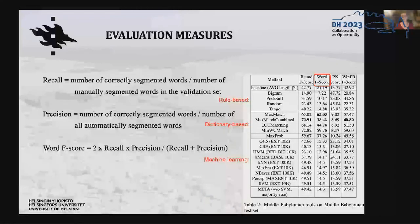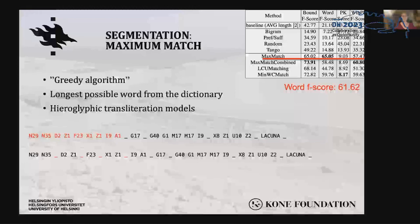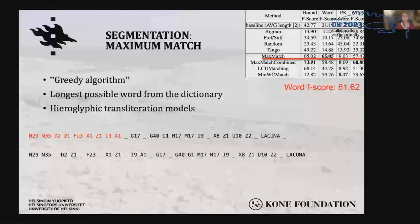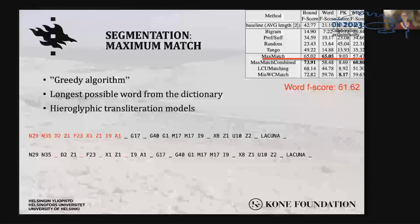Word precision is the percentage of correctly segmented words out of all words produced by the automatic segmentation. The best word F-score for Homburg and Chiarcos was 65.05, attained using the maximum matching algorithm, also known as the greedy algorithm. We implemented it using all encoded words from our transliteration models as a list of possible words. This method achieved an F-score of 61.62 for the hieroglyphic text, reasonably close to the result for cuneiform.